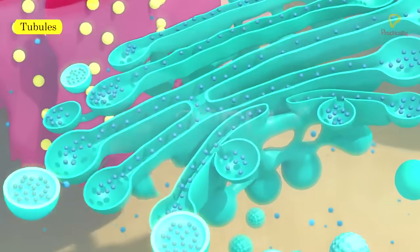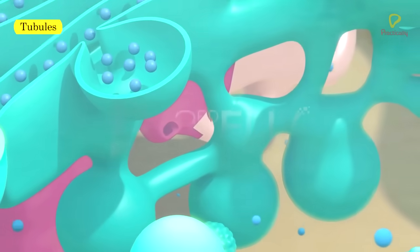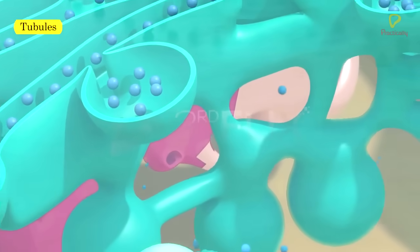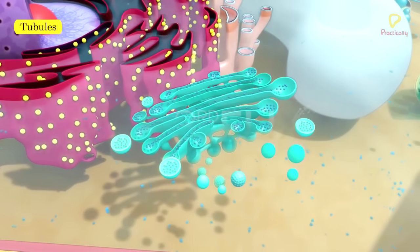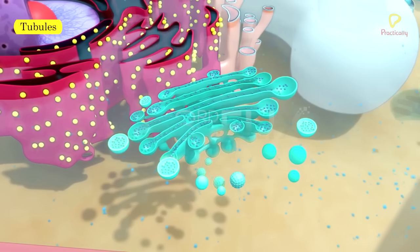Tubules are short, branched, and interconnected filamentous structures. Tubules develop on the sides and also at the maturing face of cisternae.